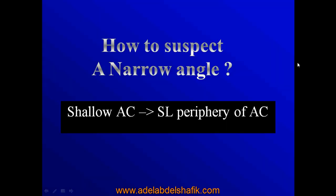Gonioscopy in Narrow Angles. Whenever we examine the anterior chamber periphery and we find it shallow, then we have to do gonioscopy.